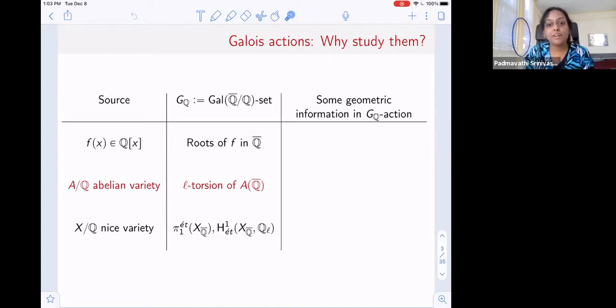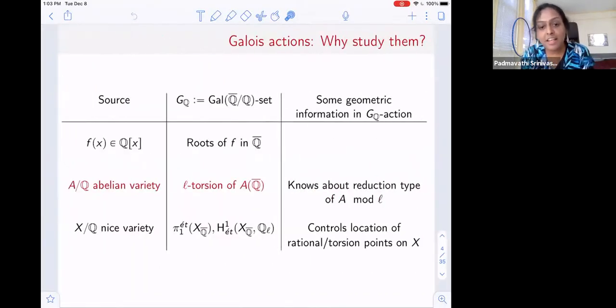But why do we study actions of the Galois group at all? The reason is that if we understand the Galois action well enough, we can go back and say something about the geometry of these underlying varieties. For instance, the action of the inertia group can tell you what the reduction of A mod L looks like. The Galois action knows about the reduction type of A mod L. And if you were in the other Vantage talks in the seminar, you might have also seen that it's really fruitful to study the fundamental group. These can tell you quite a bit about where to find rational torsion points on X. So we have good reason to study Galois actions.